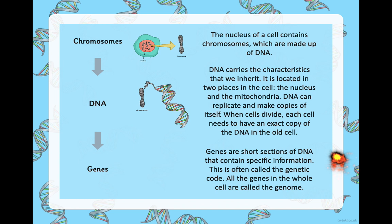Genes are short sections of DNA that contain specific information — this is often called the genetic code. All the genes in the whole cell are called the genome. This is quite advanced and you don't need to know it in Year 6, but it's just so that you've heard this vocabulary before. If you want to find out more, go on to Twinkle, DK Findout, or BBC Bitesize — they've got fantastic resources on this area of science. Please do research more if you're interested.